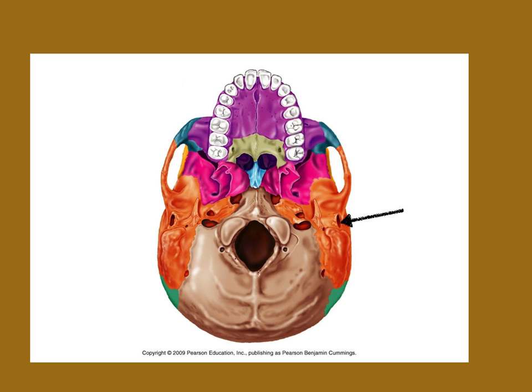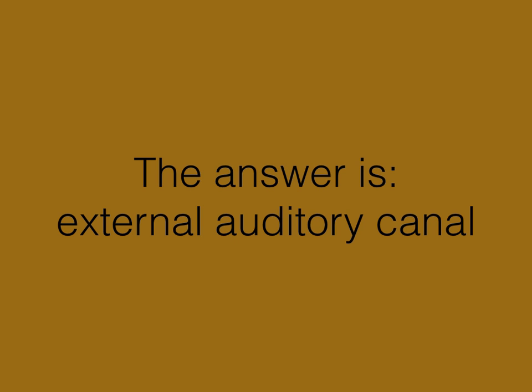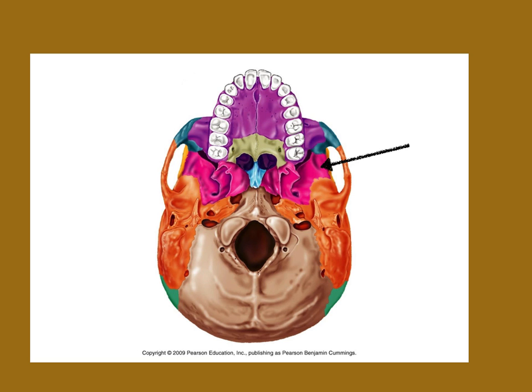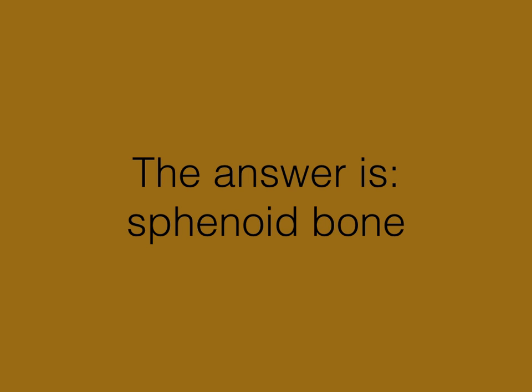What is this opening in the temporal bone called? That's the external auditory canal or the external acoustic. This is our last one — just the name of the bone. This is the sphenoid bone.